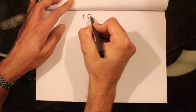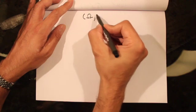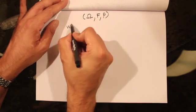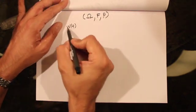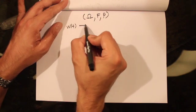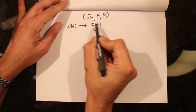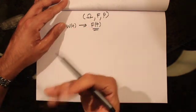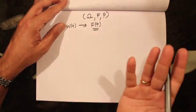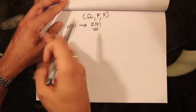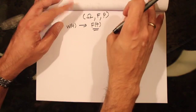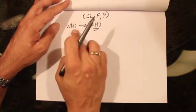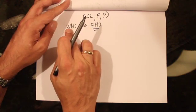We're going to have a probability space given by our sample space, a sigma algebra, and a probability measure. Defined on this probability space, we have a multidimensional Brownian motion W_t. This Brownian motion is going to generate a filtration F_t. Note the difference from Girsanov's theorem: here the filtration is generated by the Brownian motion, whereas for Girsanov's theorem that wasn't the case.